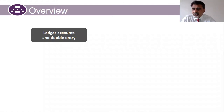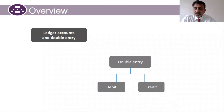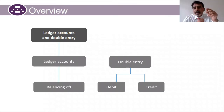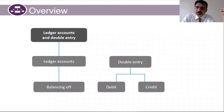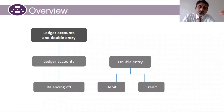We're going to discuss ledger accounts and double entry, which involves debit and credit. This is the accounting cycle: during the month you have transactions, you record them as double entries — debit and credit — into your journal. From the journal you post the transactions into the ledger account, then you close the ledger accounts, find your closing balances, and based on those closing balances you prepare your trial balance.